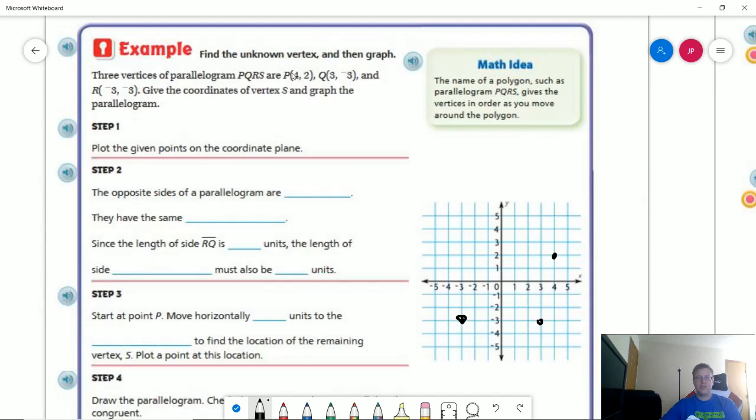So we have point P at positive 4, positive 2, Q at positive 3, negative 3, R at negative 3, negative 3, and then we have to figure out what point S is going to be.